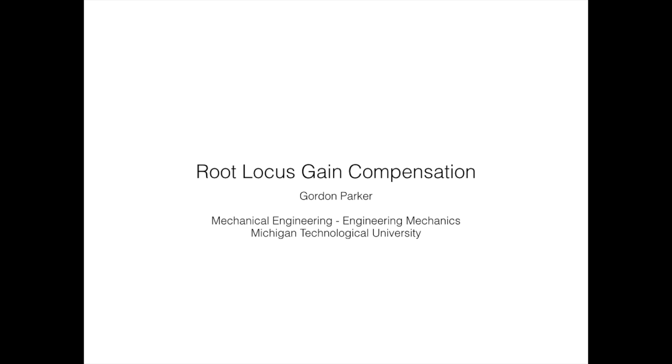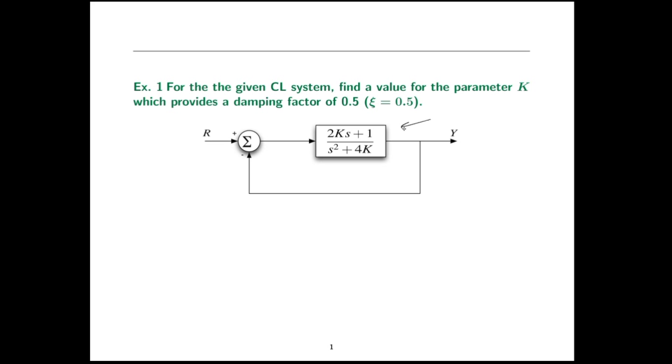Hi, this is Gordon Parker from Michigan Tech. In this example, we're going to do a root locus sketch and a quick design problem all by hand and then check it using RL tool. This is the system we're going to consider. Our goal is to get the dominant complex pole pair to have a damping ratio of 0.5.